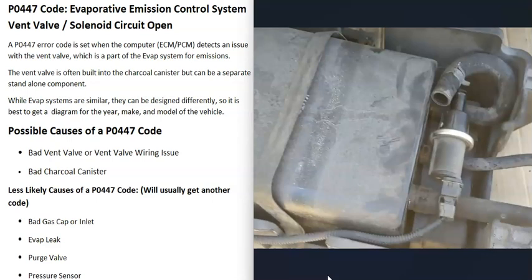Once you locate the vent valve on your particular vehicle, there are different ways to test it. It's a simple valve that opens and shuts when the computer sends it a signal, and it's a normally open valve — meaning when there's no power going to it, it should be open. You can try to blow through it; if you can't, it's stuck shut. If it is open, you can apply power to it and see if it closes.